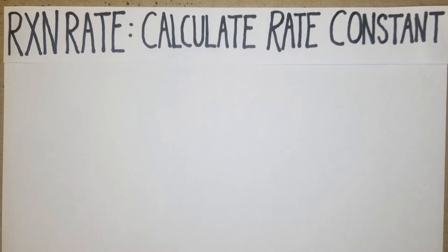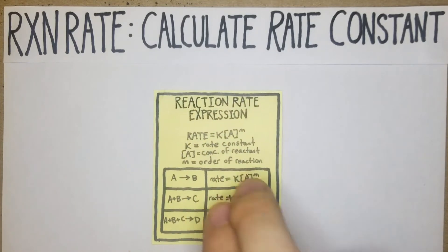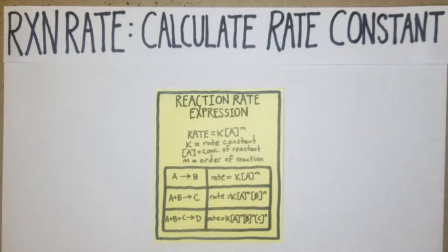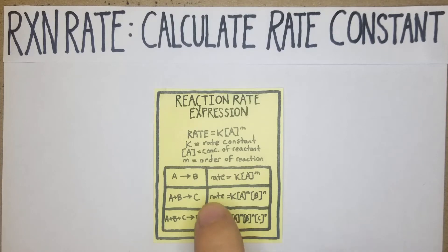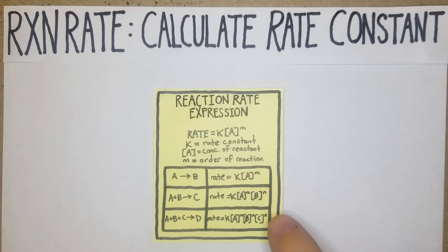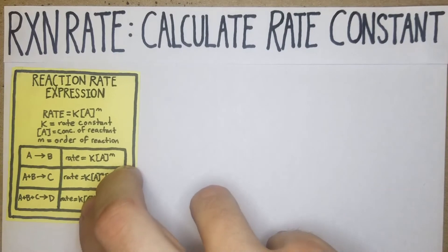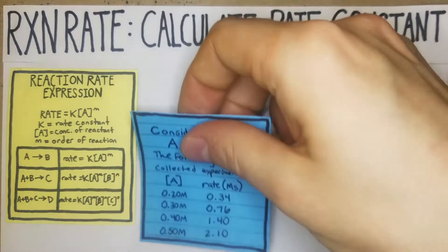In this video we're going to pick up where we left off in the previous video, continuing on with reaction rates, but this time we're calculating K, the rate constant. We're going to use these formulas to calculate K — it will obviously depend on the formula. K is the rate constant, the concentration of reactant A, B, or C, and M or N is the order of the reaction, which is what we solved for in the last video.